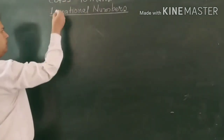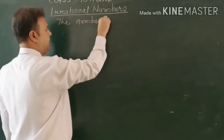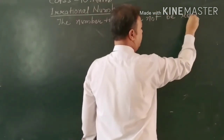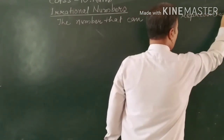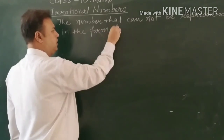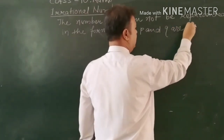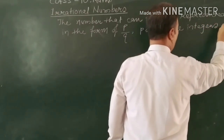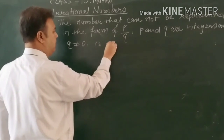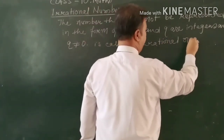How do you describe it? The number that cannot be represented in the form of P upon Q, where P and Q are integers and Q is not equal to 0, is called an irrational number.